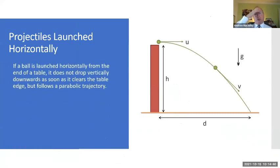So if a ball is launched horizontally from the end of the table, it doesn't drop vertically downwards as soon as it clears the table, but follows a parabolic trajectory.